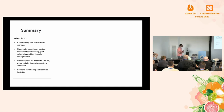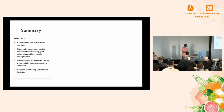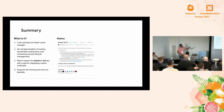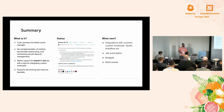So what is Kueue? It's a queuing controller — you can also think of it as an elastic quota manager. It does no re-implementation of existing functionality. It works well for the v1 Job API, has an API to integrate with custom workloads, and supports fair sharing and resource flexibility using flavors. We've released version 0.0.1, which includes everything discussed apart from the cluster autoscaler integration.